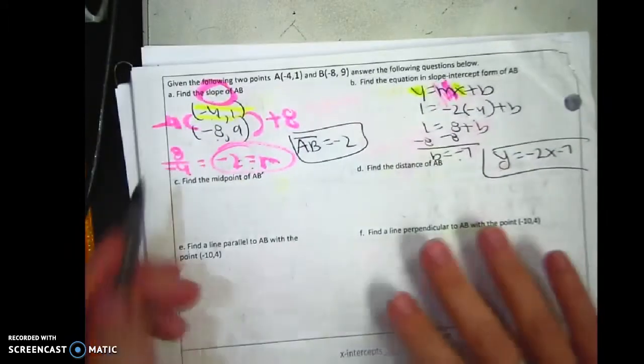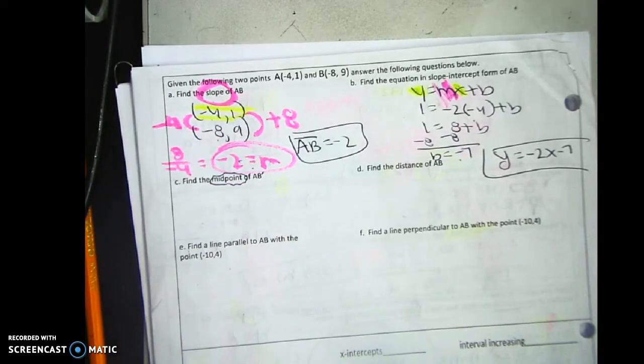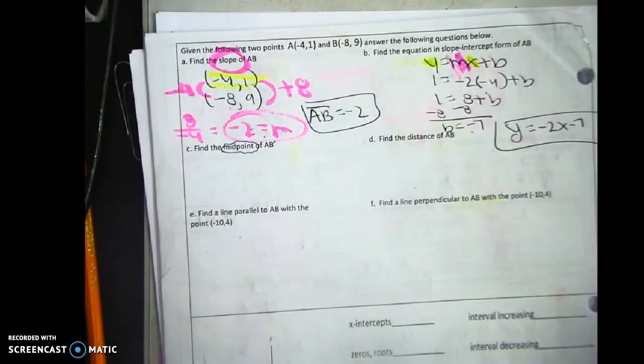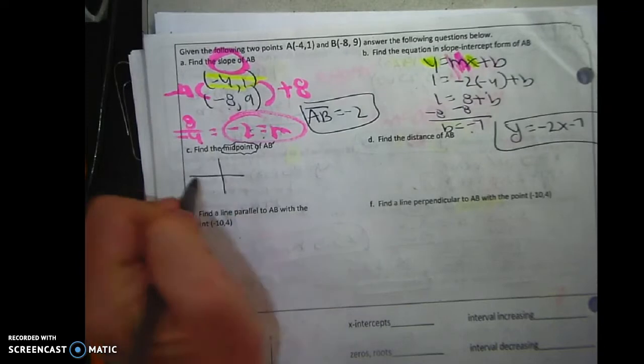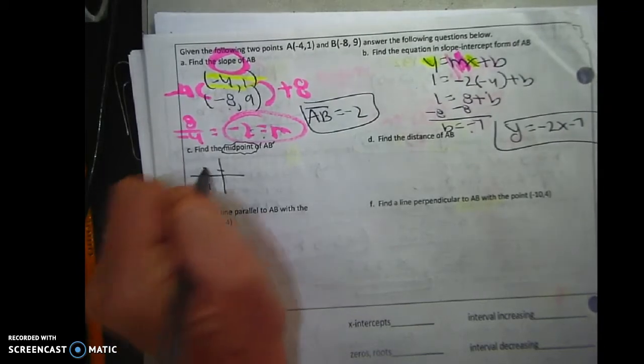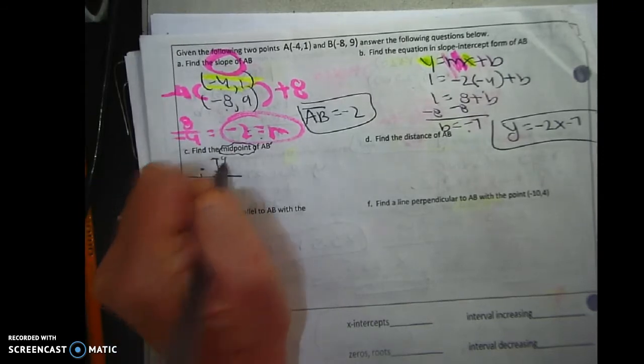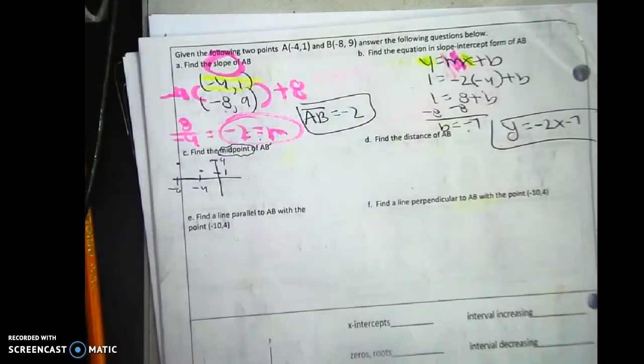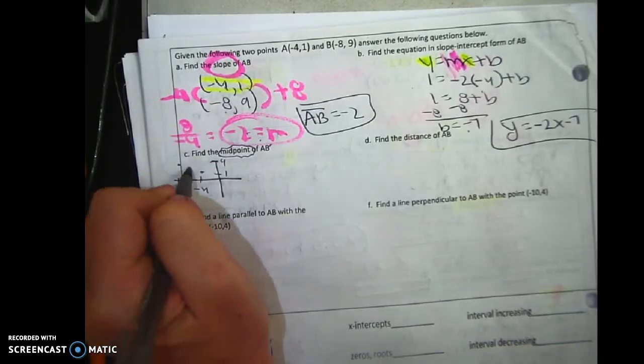Find the midpoint. Now I'm telling you right now midpoint is something that you learned in geometry. There's a logical way to do it and there's a formula. You know I'm gonna do the logical way. So one thing I could do is I could plot negative 4, 1 and I could plot negative 8, 9 and then figure out the halfway.